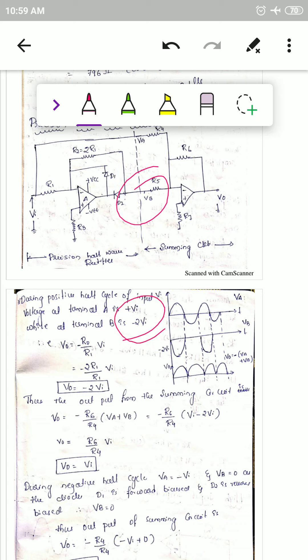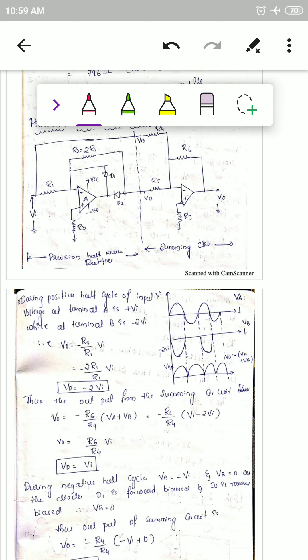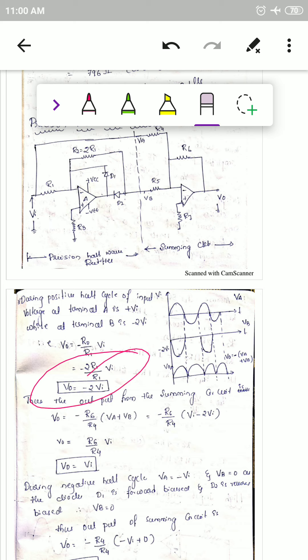This is because R2 divided by R1 equals 2R1 divided by R1, so R1 cancels. The gain equation is R2 divided by R1, where R2 is 2 times R1. So 2R1 over R1 gives a gain of 2, meaning V0 equals 2vi, and the output is minus 2vi.